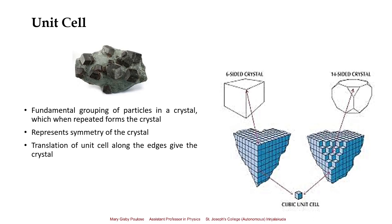By translating the unit cell along the edges, we can achieve the crystal. For example, by taking a single cubic unit cell and placing it periodically along the edges, growing it along three dimensions, we can achieve a larger six-sided cubic crystal or also a fourteen-sided crystal. So from a single cubic unit cell, we are able to achieve two types of crystals having different shapes.